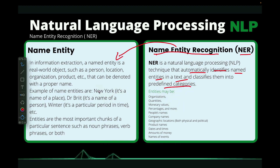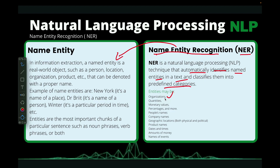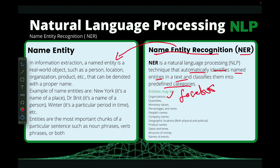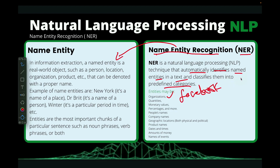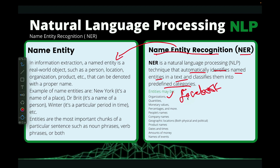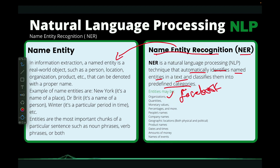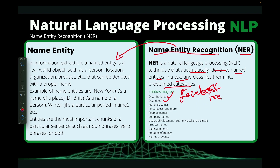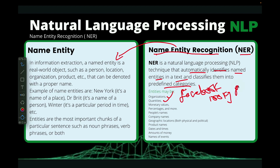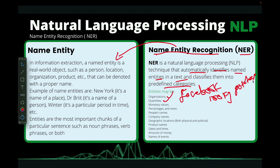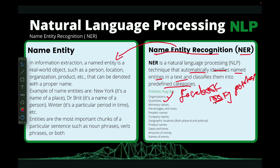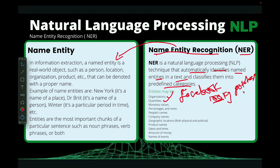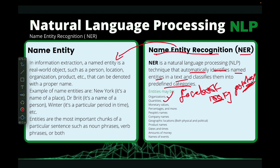For example, it could be an organization — something like Facebook. If you have a document containing the word Facebook, the NER model is going to classify that as an organization. Or maybe a quantity: if you have '100 kg of potatoes,' the '100 kg' is a quantity and 'potato' is a name — the name of a vegetable.